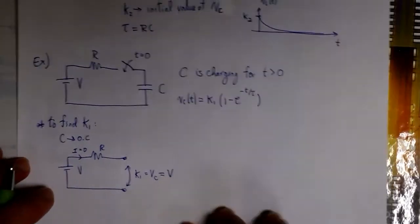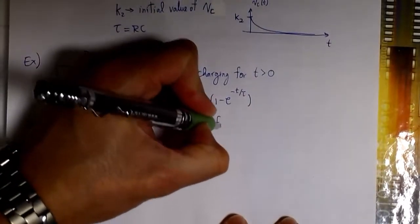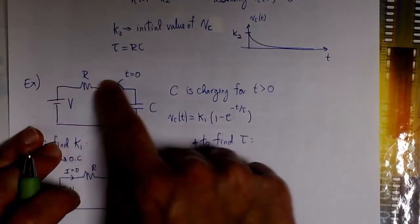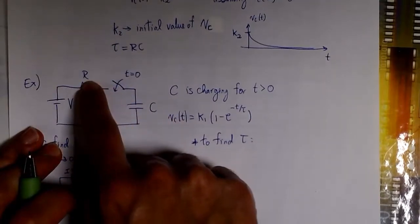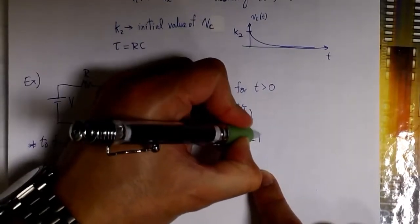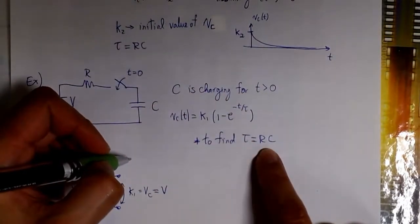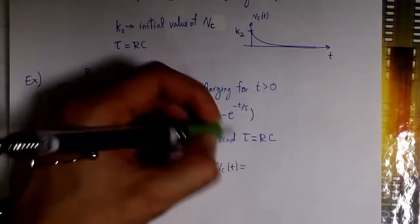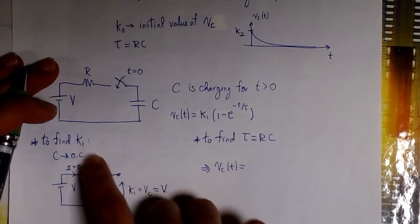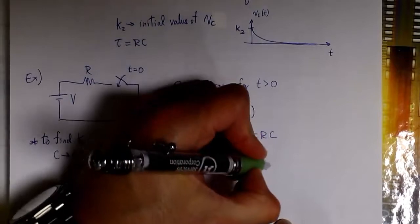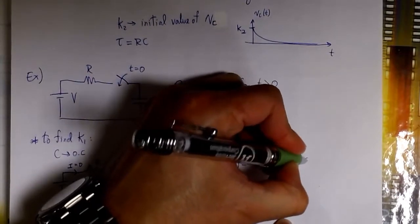To find tau, in this case it is very simple because all the current flowing from the source that is charging the capacitor, when we close the switch, is flowing through R. So R is the resistance the capacitor is charging through. To find tau, we just multiply R times C. The complete expression for the voltage is going to be k1 — that is V — times (1 minus e to the minus t over tau), and tau is RC.